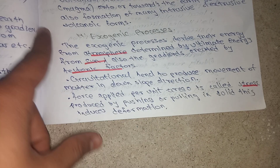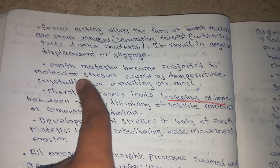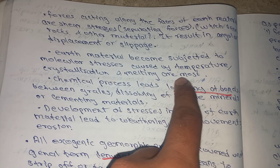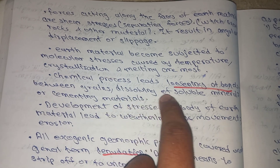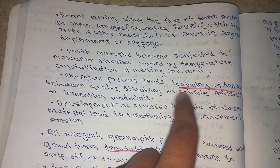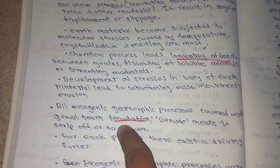Gravity tends to drive the movement of matter in a downslope direction. Earth material becomes subjected to molecular stresses caused by temperature changes, crystallization, and melting. Chemical processes lead to loosening of bonds between grains and dissolving of soluble minerals or cementing materials. The entire exogenic geomorphic process is covered under the general term denudation, which means to strip off or to uncover.